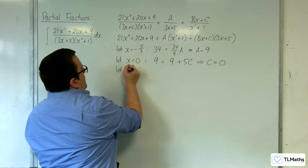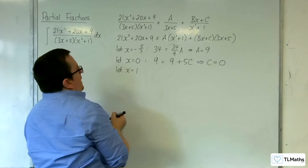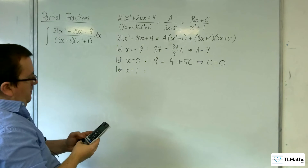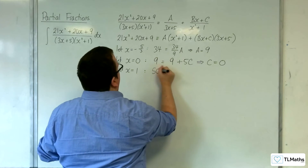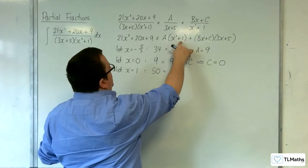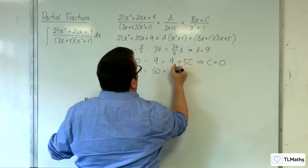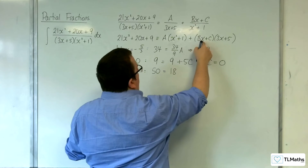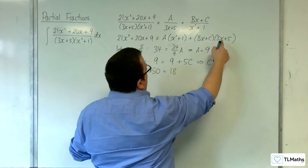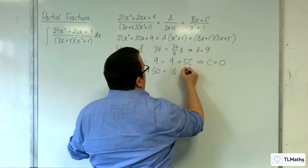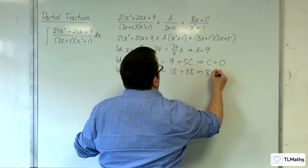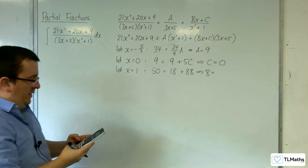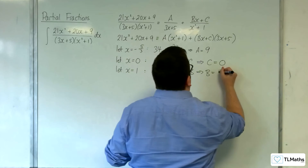Let's substitute in a number that's quite nice to work with — let's try x equals 1. So we've got 21 plus 20 plus 9, which is 50 on the left hand side. On the right hand side we have 1 plus 1, so 2 lots of a, giving 18, plus b times 1 plus 0, which is b times 8, so 8b. Subtracting 18 from both sides and dividing by 8, we get b is equal to 4.